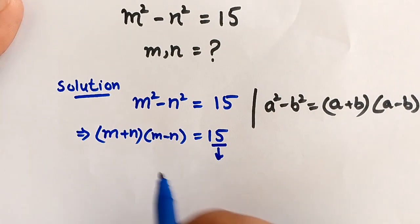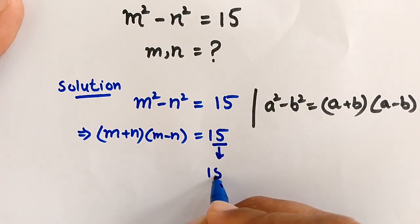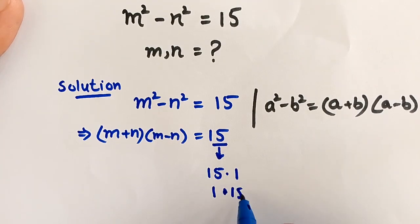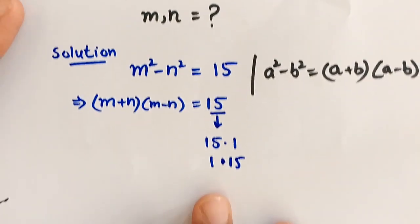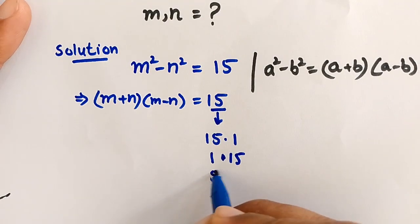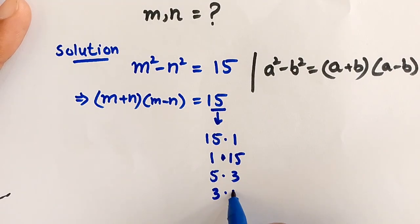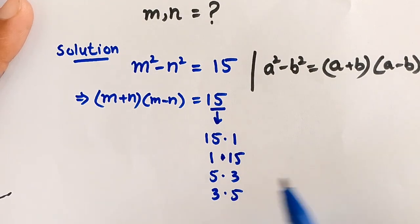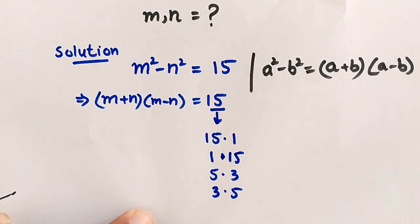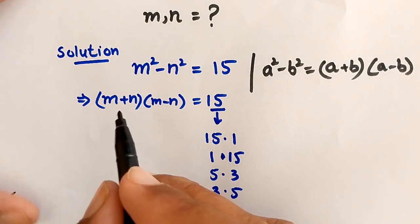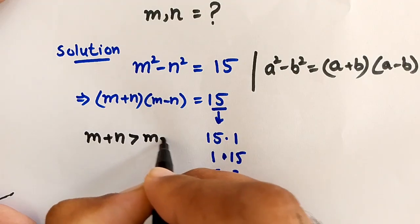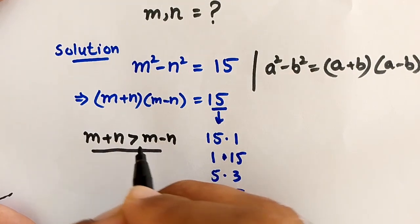Now we have to factorize 15. The factor pairs are: 15 times 1 equals 15, 1 times 15 equals 15, 5 times 3 equals 15, and 3 times 5 equals 15. We also know that m+n is always greater than m-n.